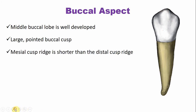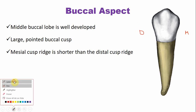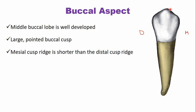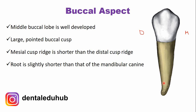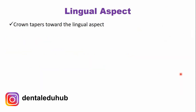From the cusp tip there are two ridges: the mesial cuspal ridge and the distal cuspal ridge. The mesial cuspal ridge is shorter compared to the distal cuspal ridge, which is slightly larger. The root of this tooth is slightly shorter than the mandibular canine, but otherwise appears similar to that of the mandibular canine.